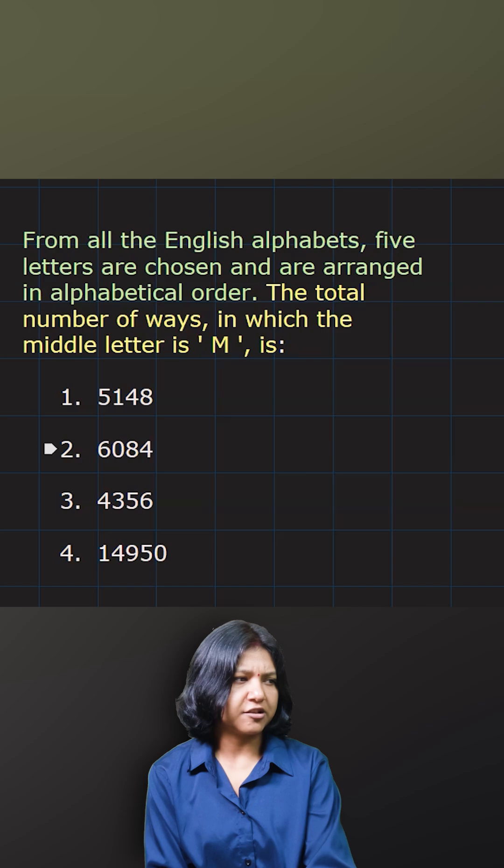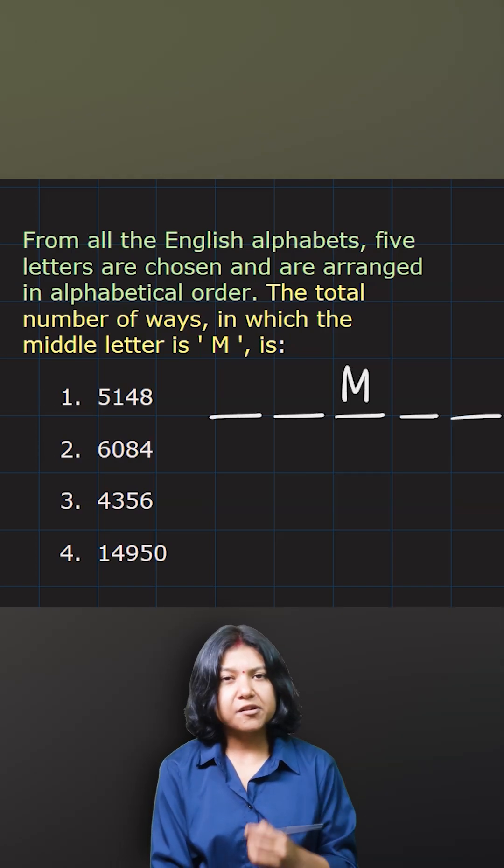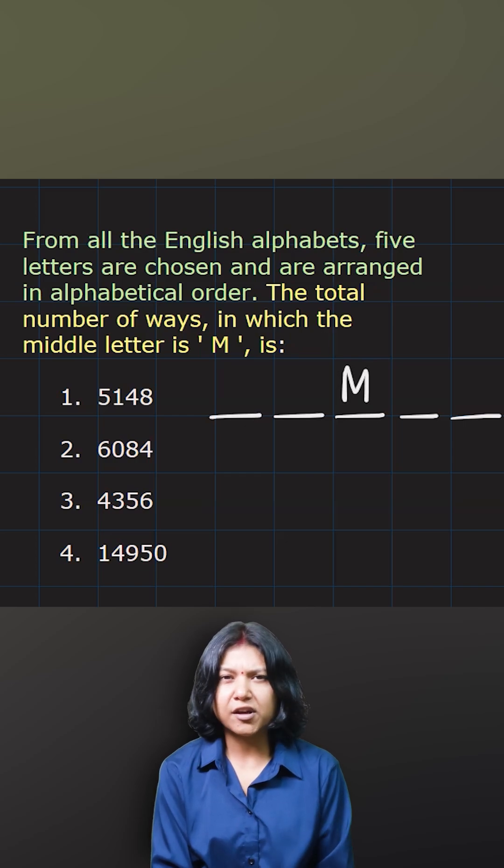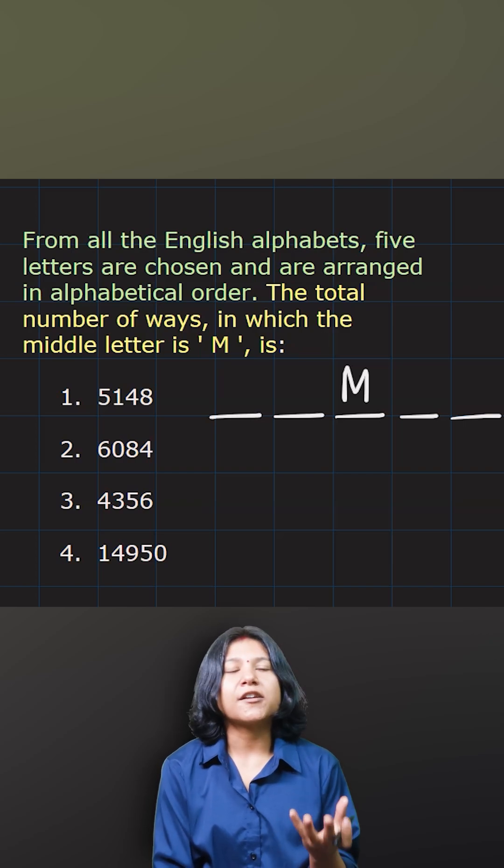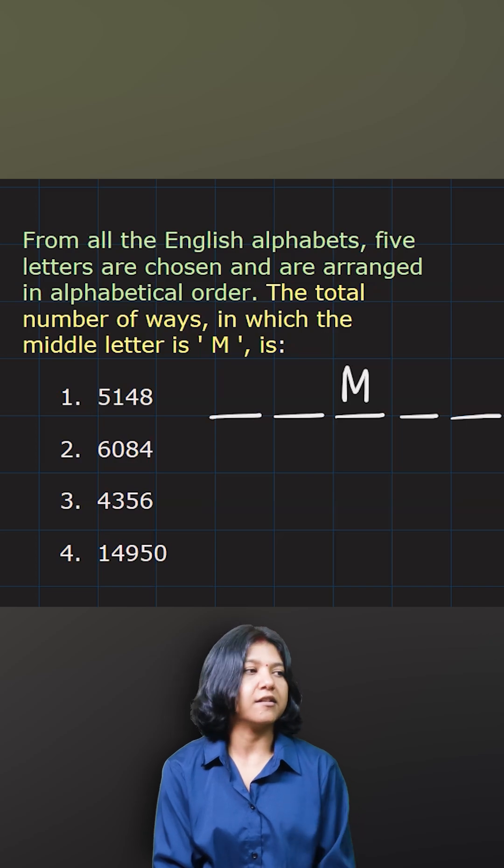So you're choosing five letters first of all. One, two, three, four, five. You want the position of M to be the middle one. Now it's really important to note one thing. They have told you to arrange in alphabetic order. So when you're going alphabetic order, then they have already decided the order. So what we really care about is the combination here and not the permutation. Because the order is pre-decided.